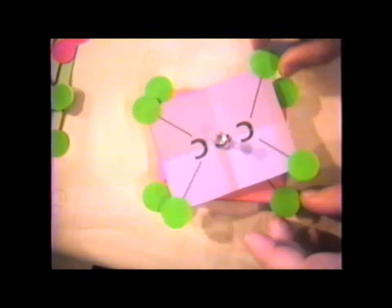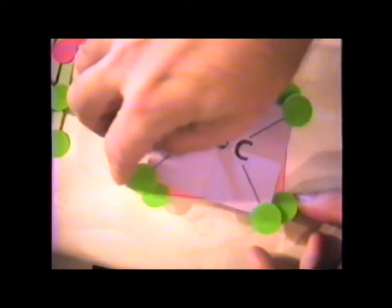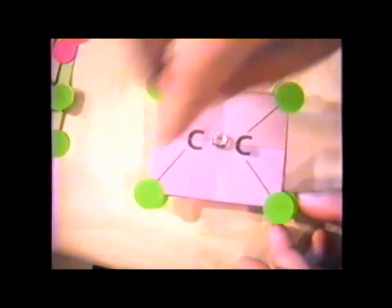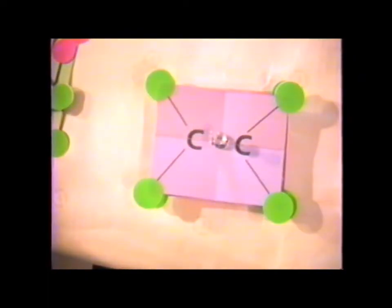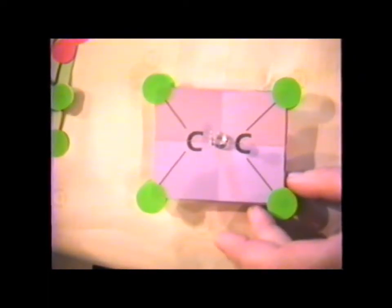And we see again if we do another C2 operation, that the substituents — the green dots — all line up, which shows that this particular molecule has a C2 operation as a member of the group.